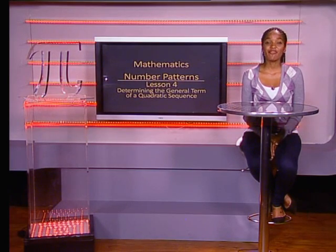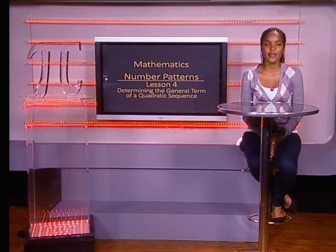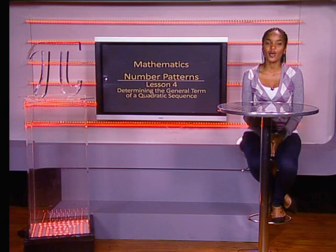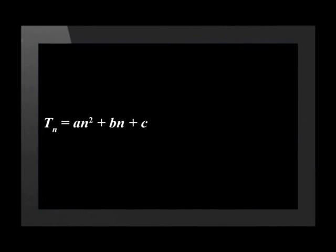Hello everyone. In this lesson, we look at another method to find the nth term of a quadratic sequence. A quadratic sequence is generated by the formula Tn equals An squared plus Bn plus C. Tn is called the nth term or the general term. If we have the values of A, B and C, we can find any term in the sequence and the position of any term in the sequence.